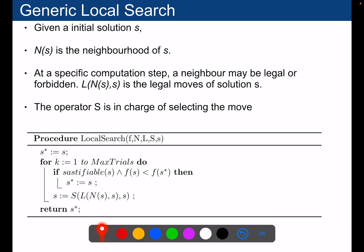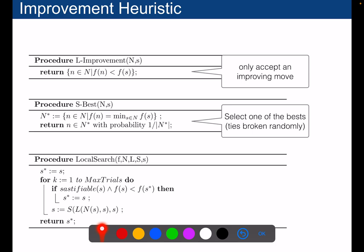And if this next candidate solution is feasible and it improves the current best objective function, then you will replace the best solution so far. And at the end, this is the one that you will return after a maximum amount of trials. Let's study some possible implementations for the operator N and the operator L and S.